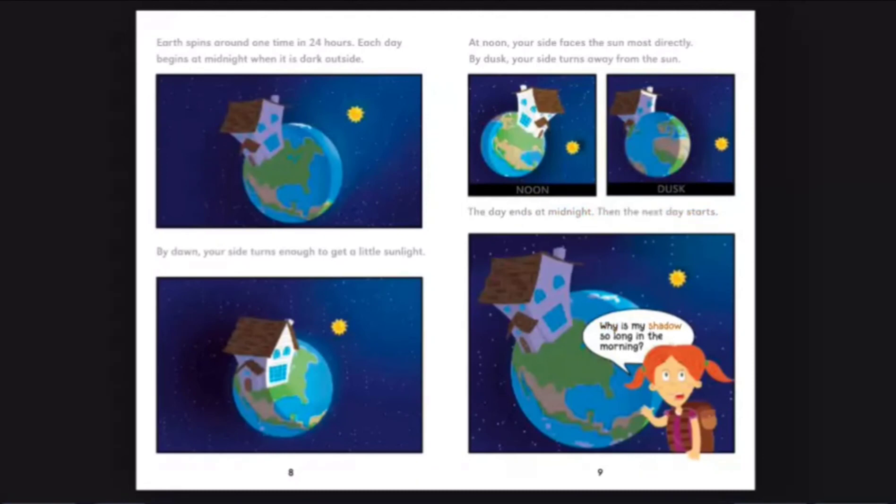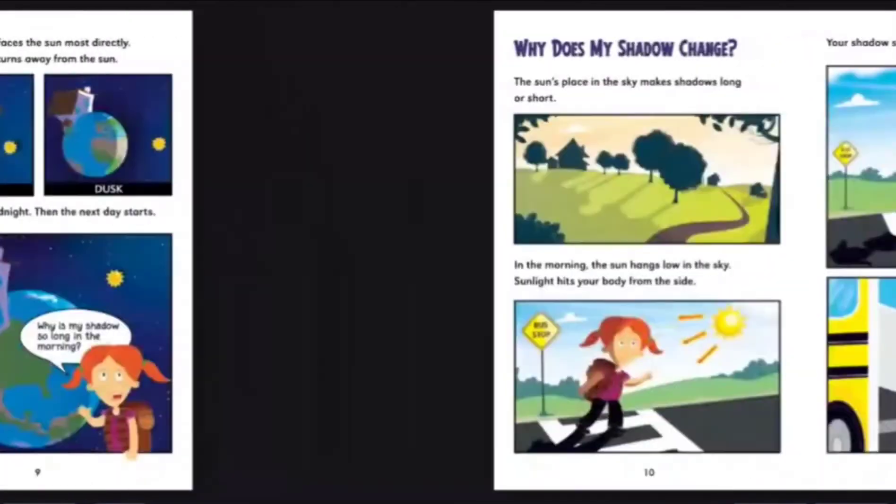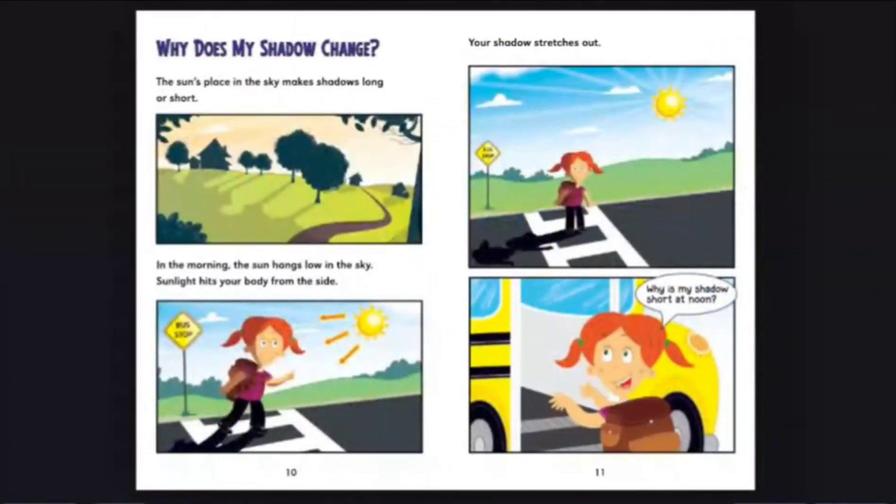Why is my shadow so long in the morning? Why does my shadow change? The sun's place in the sky makes shadows long or short. In the morning, the sun hangs low in the sky. Sunlight hits your body from the side. Your shadow stretches out.